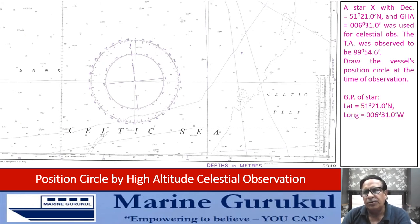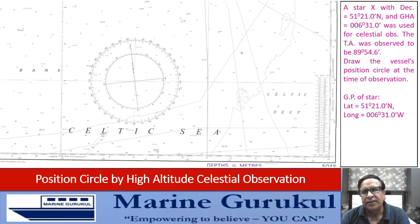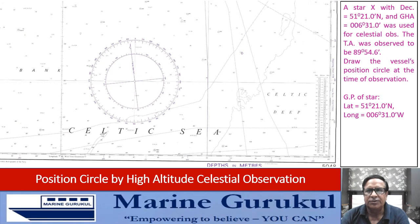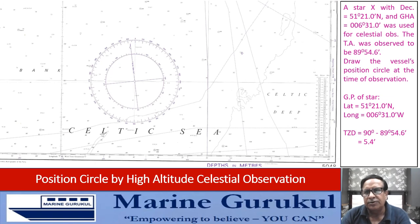First we get the GP of the body. The declination of the star is 51° 21' North, so the GP of the star becomes latitude 51° 21' North. The GHA of the star is less than 180°, so the longitude of the GP will be the same as the GHA and named west — longitude of the GP becomes 6° 31' West. If the true altitude is 89° 54.6', then the TZD becomes 90° minus 89° 54.6', which equals 5.4 minutes. We then draw a position circle with GP as the center and TZD as the radius.